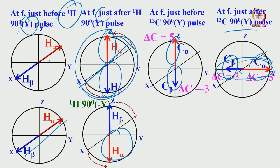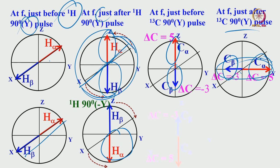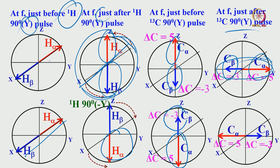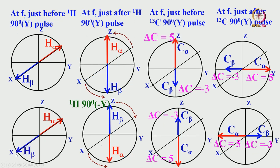If this magnetization got inverted because we are applying a minus-y pulse, what is going to happen for carbon-13? Just before the 90 pulse it was the same, because we have not touched it yet. As soon as we apply 90 degree positive for carbon-13, the C-alpha, which was along plus-y, came to minus-y, and C-beta, which was along minus-y, came to plus-y. When you apply the 90 degree pulse and do the two experiments — once with plus-y and once with minus-y — this is what happens.